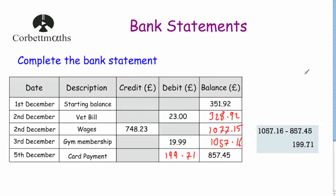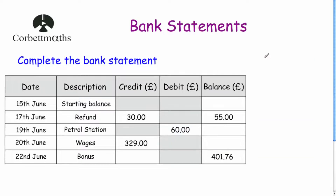Now let's look at a non-calculator question — we work these out ourselves. We need to complete the bank statement. On the 15th of June the starting balance is blank. On the 17th of June there's a refund — a credit of £30 — and the balance after is £55. Since adding £30 gives £55, there must have been £25 in the account before the refund.